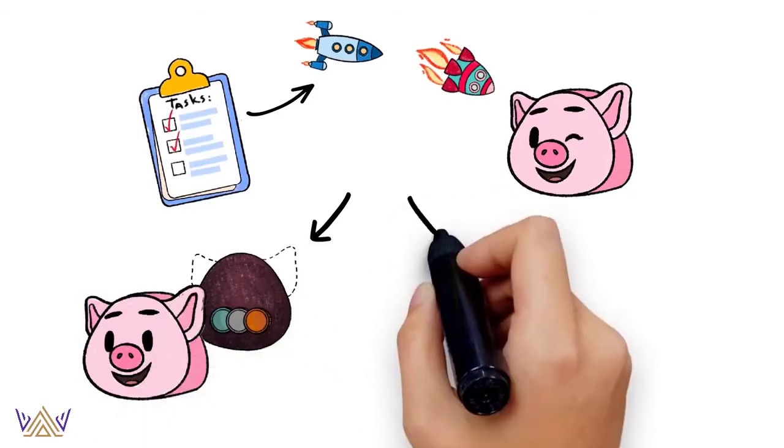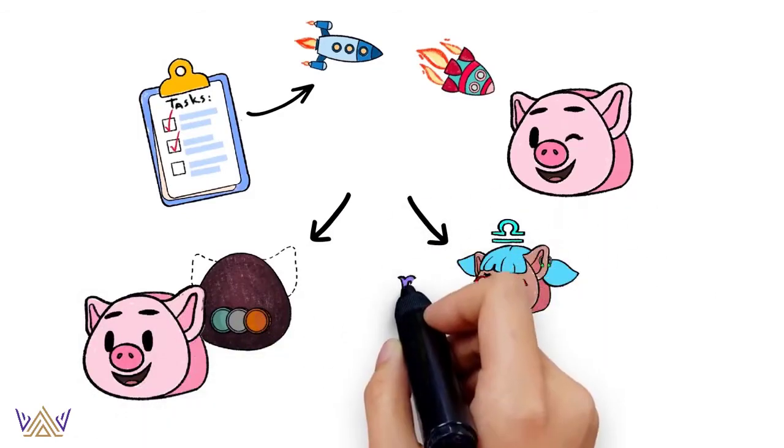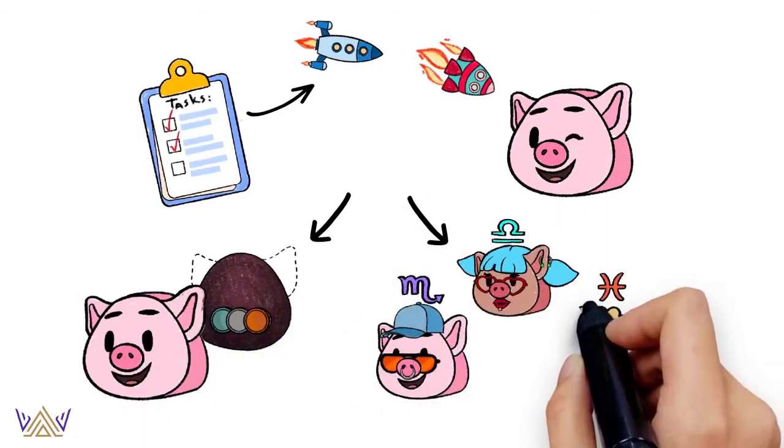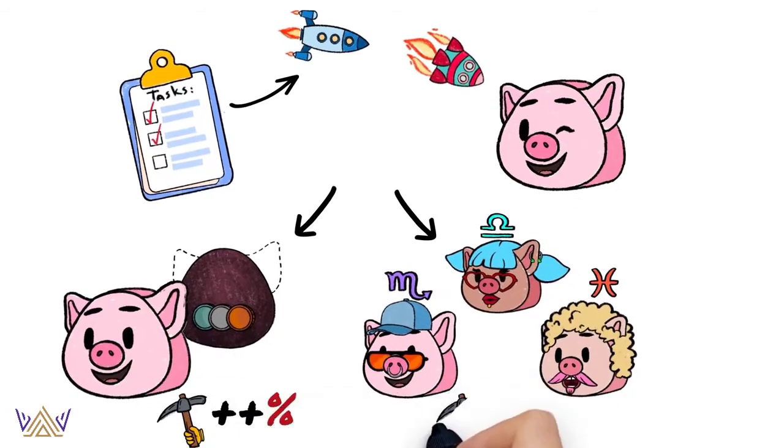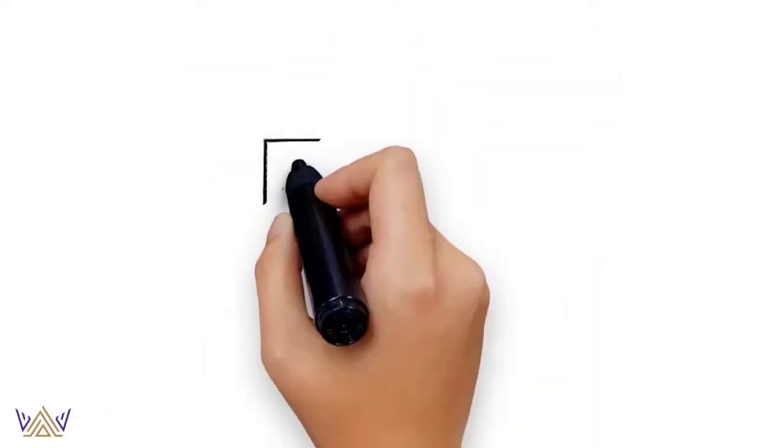An example task would be to put three different crypto tokens into your piglet, or collect piglets with three different zodiac signs. Every completed task gives you a certain percentage of boost on your mining speed.